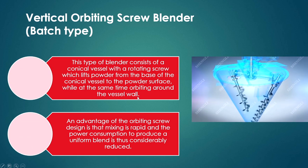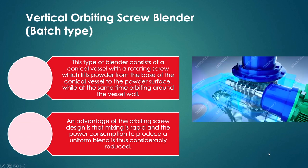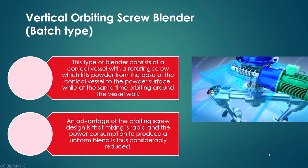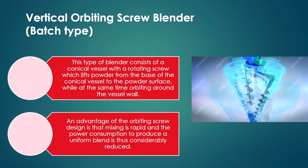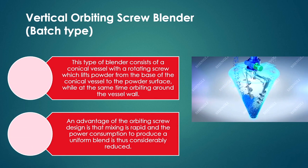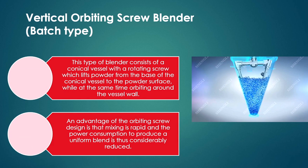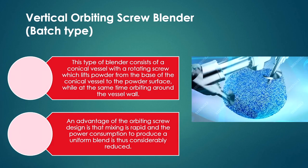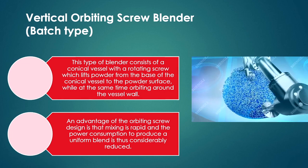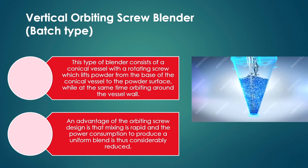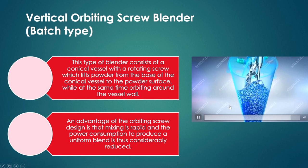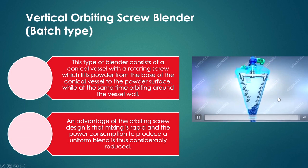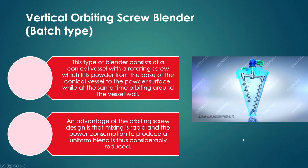The vertical orbiting screw blender consists of a conical vessel with a rotating screw that lifts powders from the base of the conical vessel to the powder surface while at the same time orbiting around the vessel wall. An advantage of this orbiting screw design is that mixing is rapid and powder consumption to produce a uniform blend is considerably reduced.